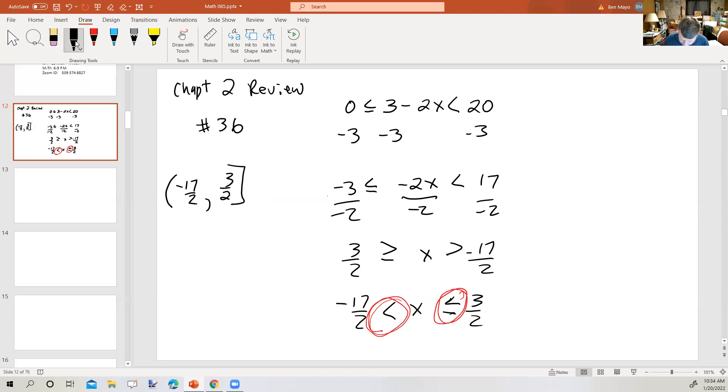All right. Now, the graph, what would the graph look like? OK. So we're going to have 0 and 3 halves and negative 17 halves, parentheses here, bracket there, line segment in between. Now, on the particular graph, and I'm going to show you that here in just a second.